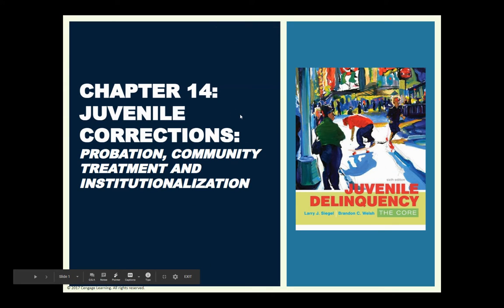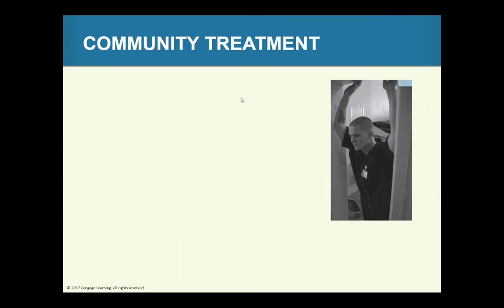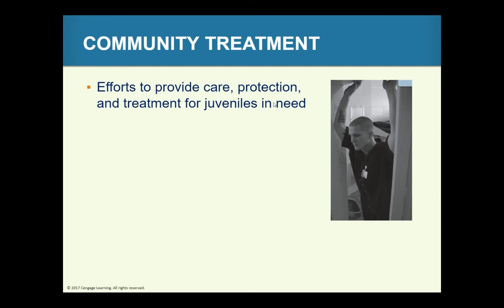Welcome to Chapter 14, Juvenile Corrections. Two major categories of treatment exist for juveniles: community treatment and institutional treatment.